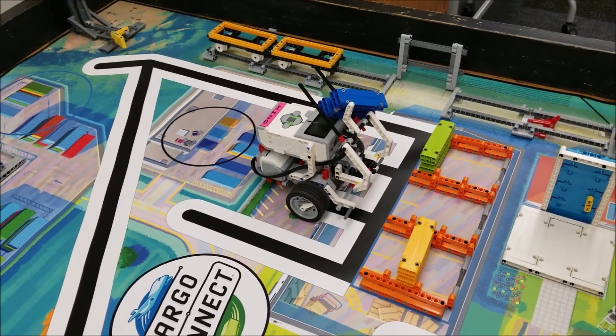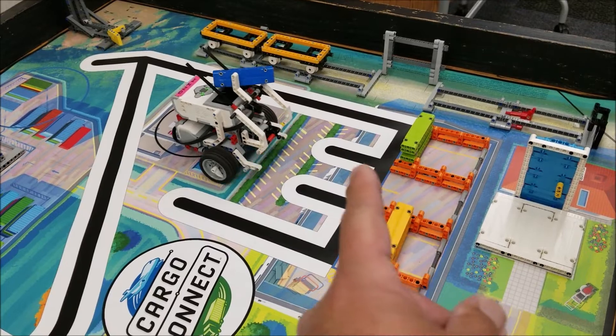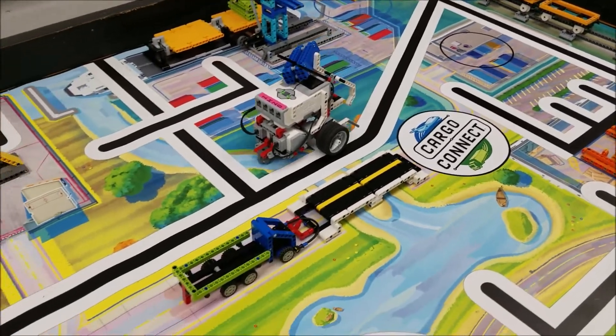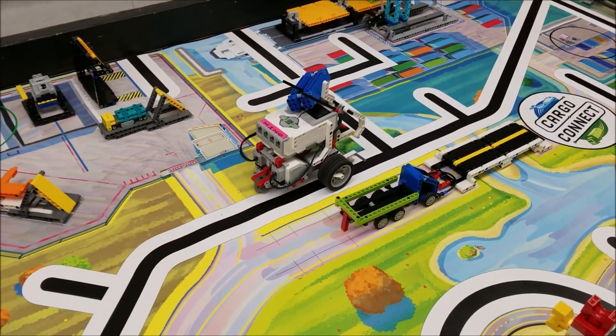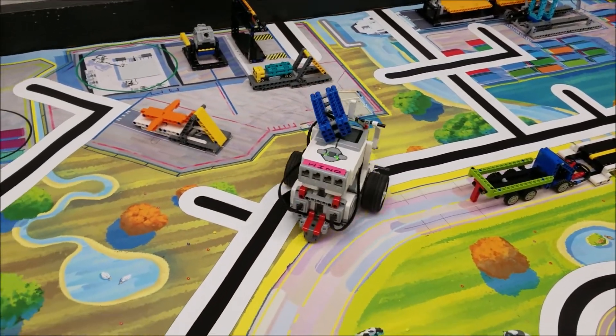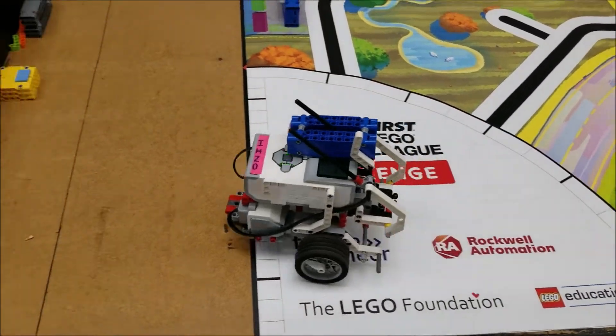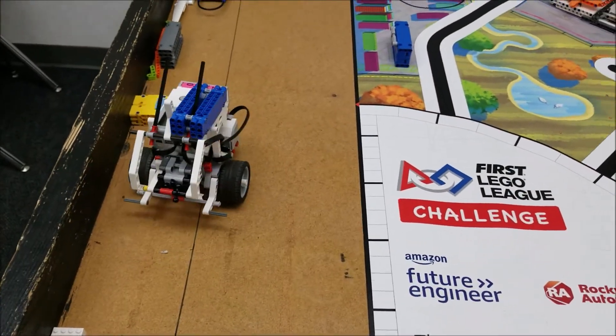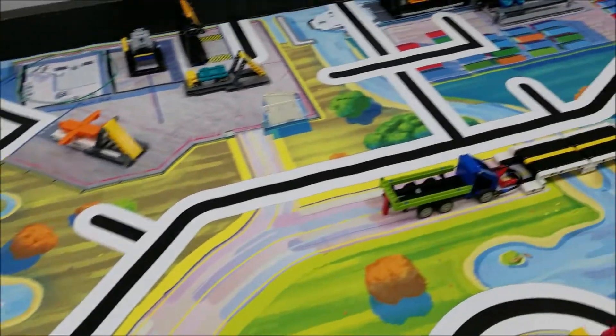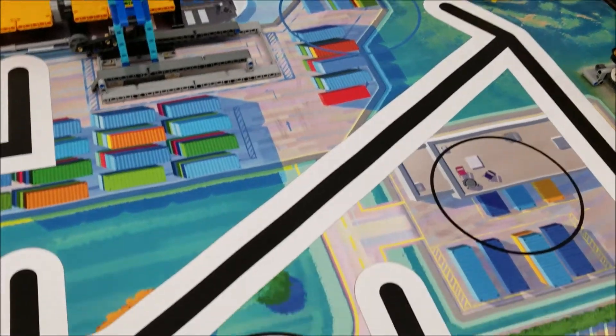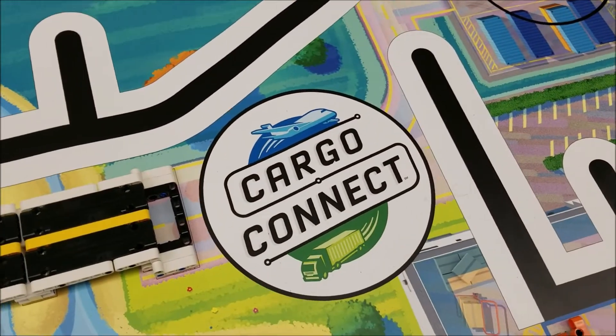So it would have grabbed it no matter where it was in the position, either at the front or in the middle. And what we now have is another container now to be able to get points with. So what we can do now is take that blue container and to try to put it to that circle for 20, we can put it in this cargo connect for 10.